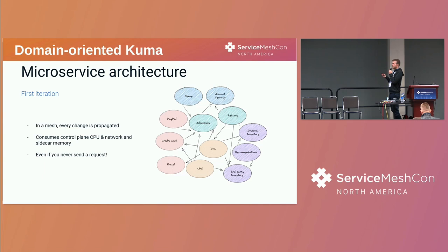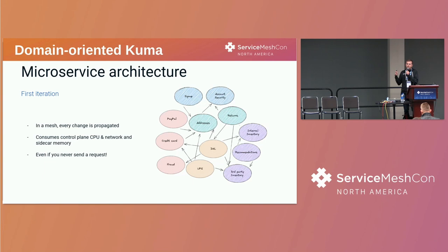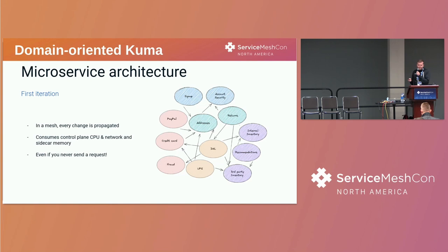In a service mesh, the control plane is calculating configuration for all of the sidecars for these services. If we imagine a new service coming up, the control plane needs to calculate configuration for sidecars of all other services. This uses CPU, it needs to send that configuration over the wire, wasting bytes, and the sidecar itself is holding this config in memory — even if this new service is only used by one or two services of the many microservices you have.